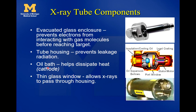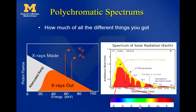X-ray tubes and linacs produce what we call a polychromatic spectrum — meaning many different energy x-rays come out of a single linac or x-ray tube. You get a whole wide range of x-ray energies out, and coming out of the x-ray tube there are also some characteristic x-rays if the target is tungsten. So out of the x-ray tube, we get a whole bunch of different x-ray energies — this is kind of like the sun, which produces a multicolored spectrum of light.